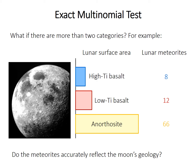That's the exact binomial test — it works for only two categories. What if you have more? For example, if you know the area that three different rock types cover on the moon's surface and have counts of 86 meteorites from the moon, you might wonder if the meteorites reflect the moon's geology. You could run multiple exact binomial tests, but remember the problem of multiple comparisons and enhanced Type I error risk. The exact multinomial test is designed for when you have more than two categories.